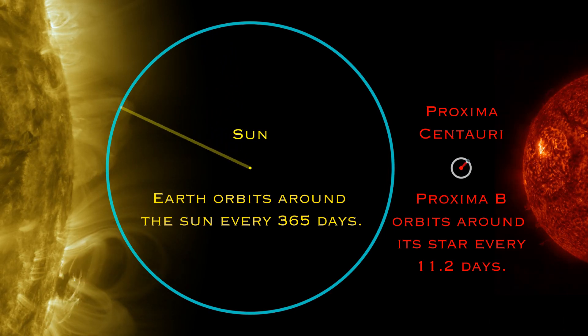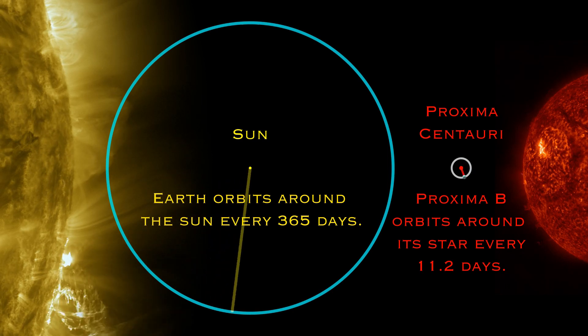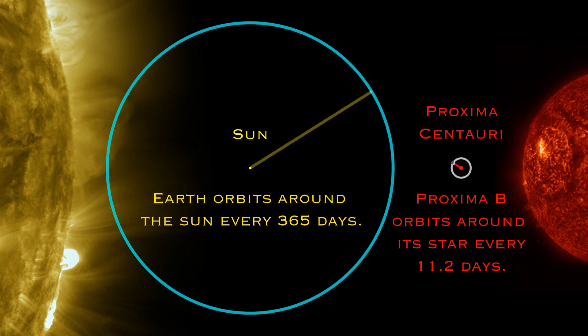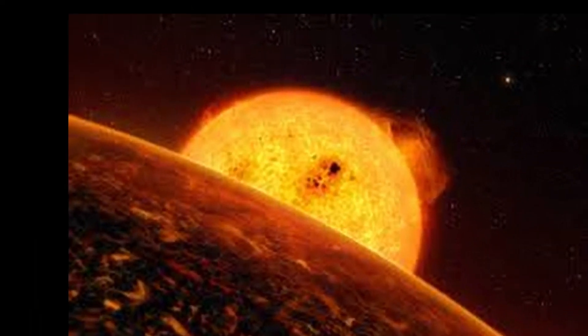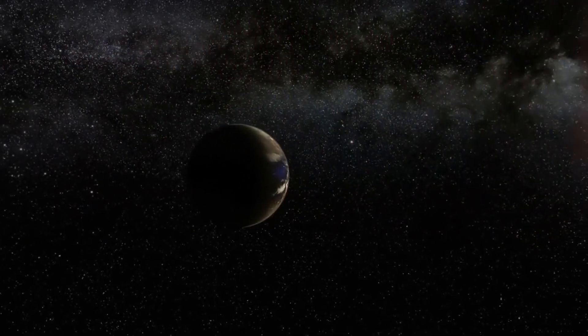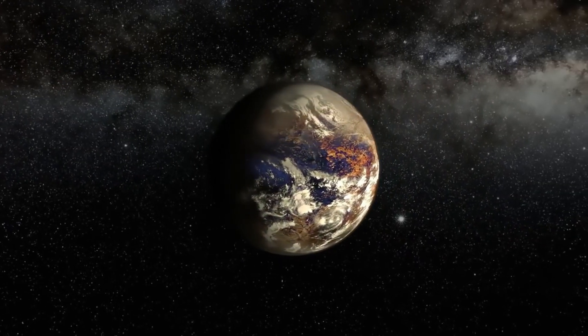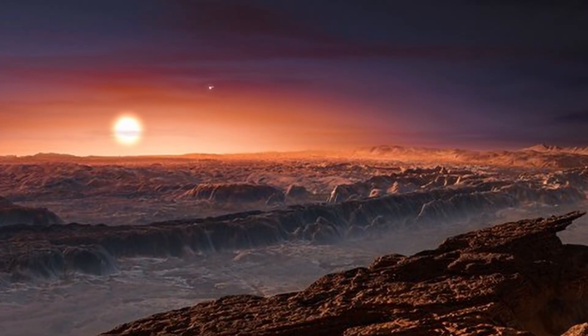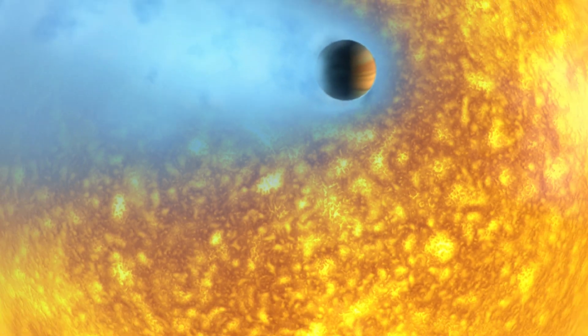Proxima Centauri B is roughly Earth's size and has an orbital period of 11.2 Earth days with an orbital radius of 0.05 astronomical units, or 5% of Earth's orbital radius around our Sun. This would be a baking hot world, but since Proxima Centauri is much smaller and cooler than our Sun, this planet sits in the habitable zone where liquid water may exist. Simulation models from NASA show it has a rocky, Earth-like structure and an atmosphere similar to ours, but the problem is it can easily be stripped away by intense radiation and solar flares from its parent star.